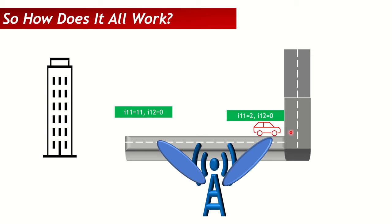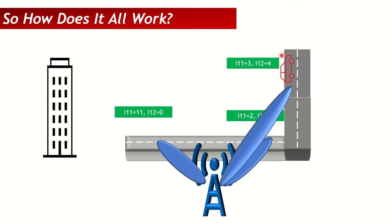Now if the car starts moving down a road that goes away from the cell, the elevation angle from the gNodeB changes. The UE sends CSI feedback with, for example, i11=3, i12=4 — so now i12 has also changed. The gNodeB adjusts the beam's elevation angle to ensure it still reaches the UE moving away from it. Similarly, a UE on the ground floor of a building might send i11=15, i12=0.